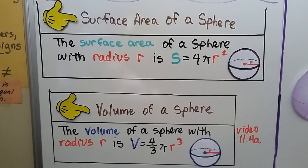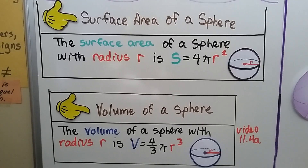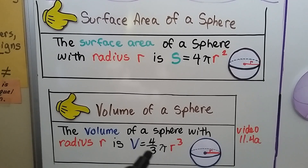For your notes, we have a formula: the surface area of a sphere with radius r is S equals 4 times pi times the radius squared. In the last video, we learned about the volume of a sphere — if it has a radius r, its volume V is equal to 4 thirds times pi times the radius cubed.